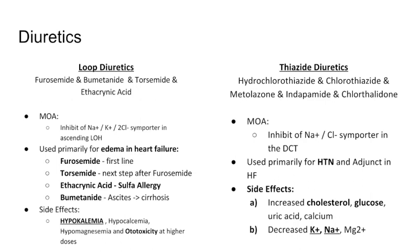Loop diuretics are sort of the stereotype for side effects — they have 10 to 15 listed. However, they don't test them all. What they like to test is hypokalemia. You need to know that loop diuretics cause hypokalemia. They do cause other electrolyte abnormalities — hypocalcemia, hypomagnesemia — but the one they're going to test is hypokalemia.